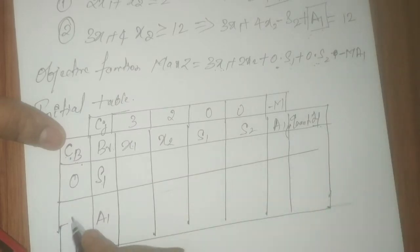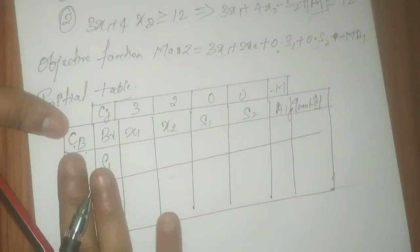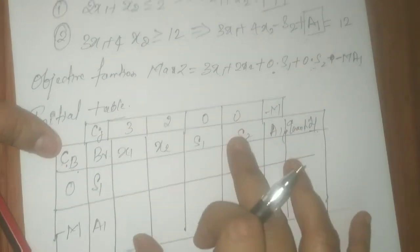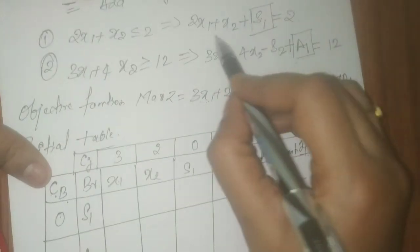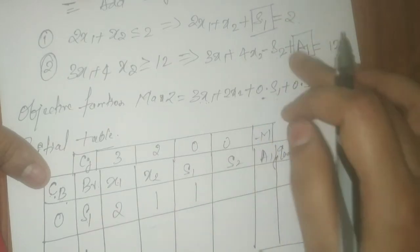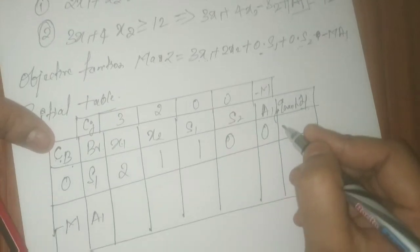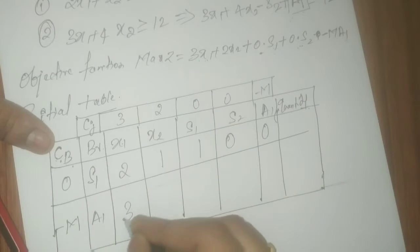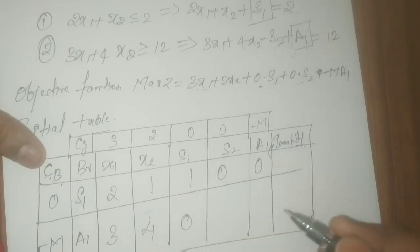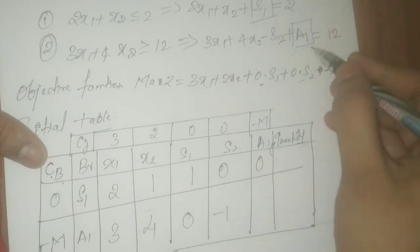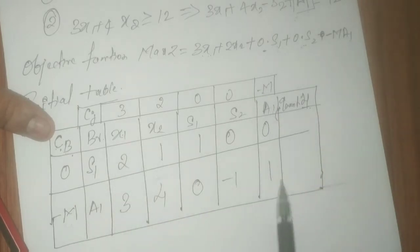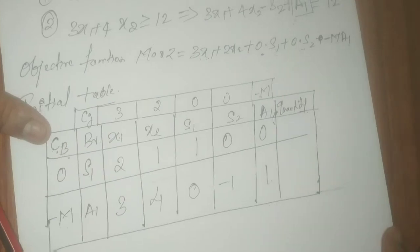Now fill the entries inside the table from the constraints. From the first constraint: x1 is 2, x2 is 1, s1 is 1, and s2 and a1 are not present so they are 0. From the second constraint: x1 is 3, x2 is 4, s1 is 0 since s1 is not in the second constraint, s2 is minus 1, and a1 is 1. Remember: in the objective function a1 is minus M, but in the constraint, a1 has coefficient 1. The quantity values are 2 and 12, the RHS values of the constraints.